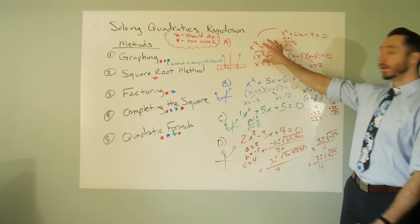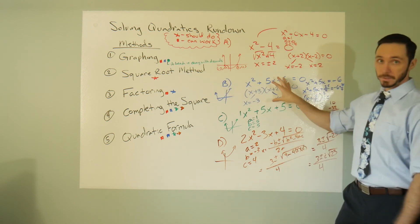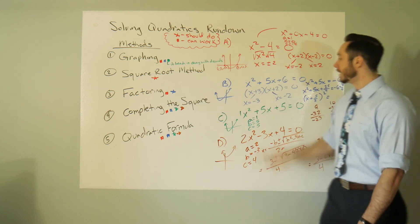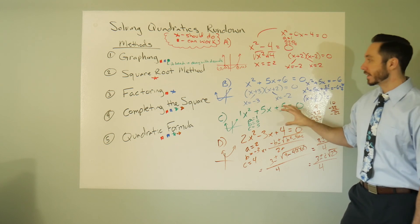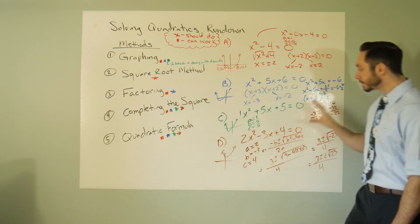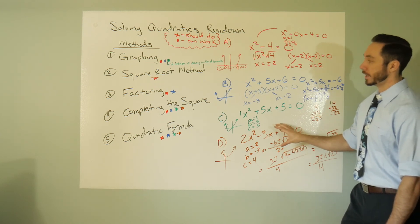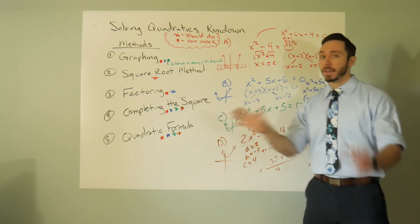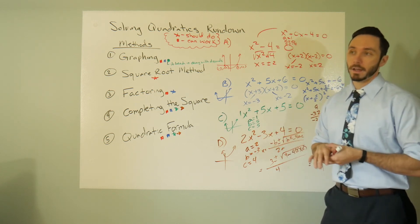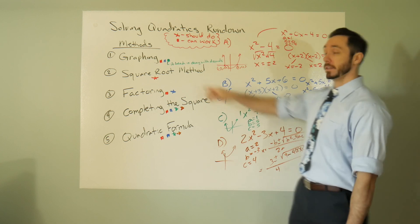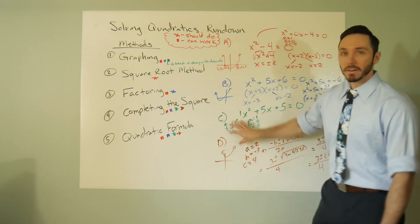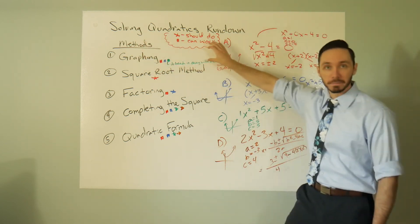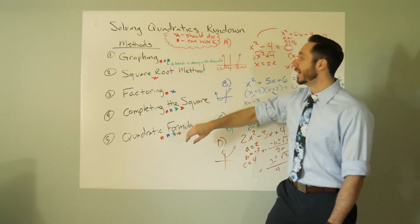In summary: no linear term — square root method is your best choice. Factorable quadratic — use factoring, save yourself the headache. Non-factorable trinomial — use completing the square or quadratic formula, whichever is your favorite. Non-factorable with no real zeros — same thing: completing the square or quadratic formula. If you have a calculator on your test, the last three cases can all be solved by calculator.